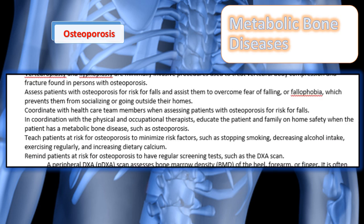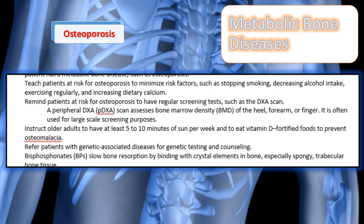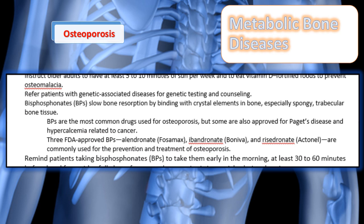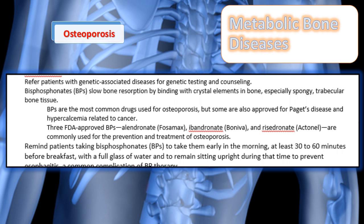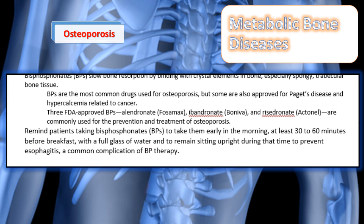For patients with osteoporosis, you want to teach those at risk to minimize risk factors such as stopping smoking, decreasing alcohol intake, exercising, and increasing dietary intake of calcium. Remind patients to take their medications and undergo regular screenings for osteoporosis. Your notes include examples of drugs used to treat osteoporosis, including the bisphosphonates — the three FDA-approved ones being Fosamax, Boniva, and Actonel. You need to review those.